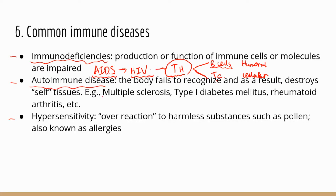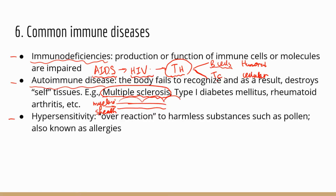One well-known autoimmune disease is multiple sclerosis. Axons are wrapped by myelin sheath, which insulates the axons, keeping electrical signals going in the correct direction and allowing them to jump and travel faster. In multiple sclerosis, the body attacks and damages the myelin sheath, so without that insulation layer, electrical signals go in all kinds of directions — that's what causes the symptoms of multiple sclerosis.